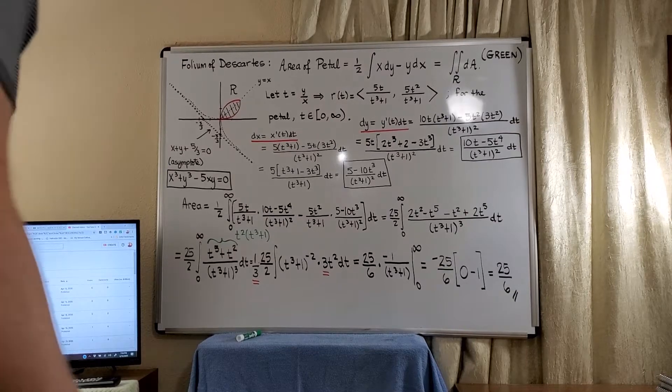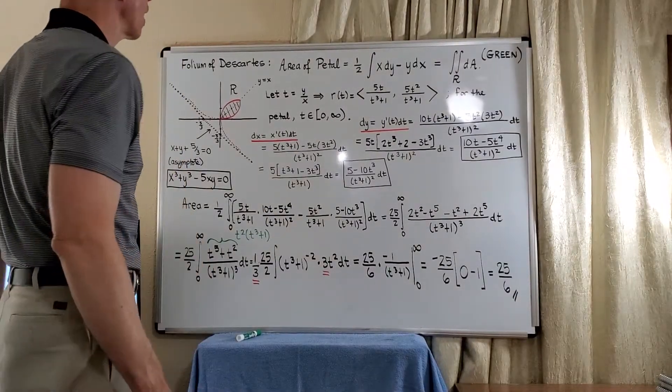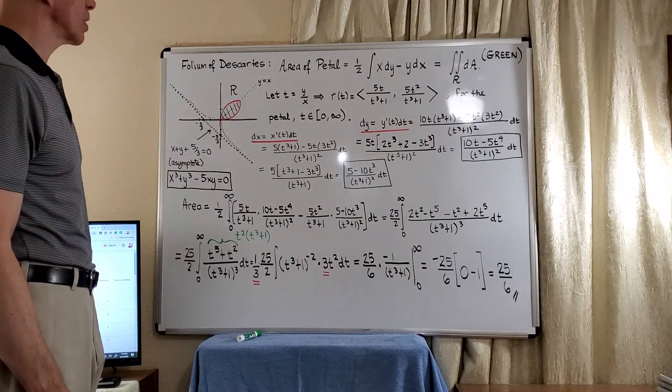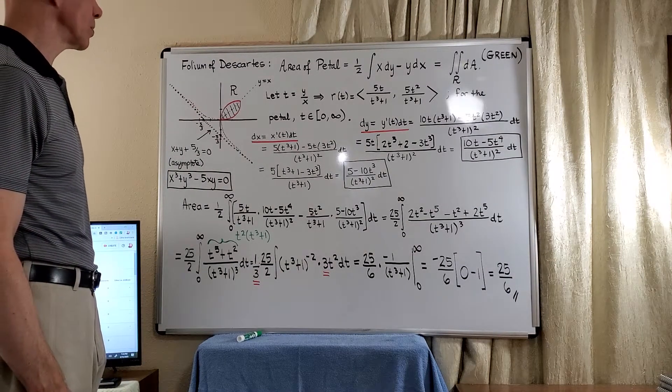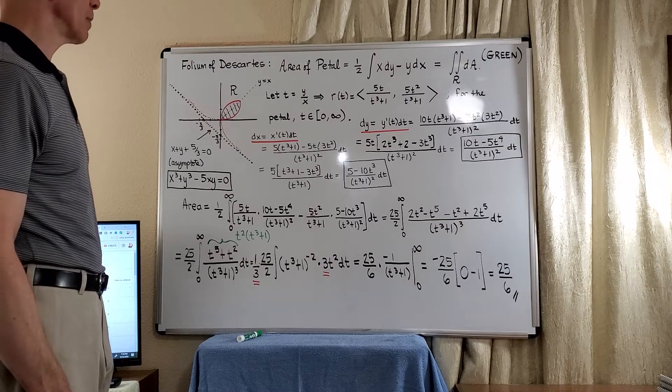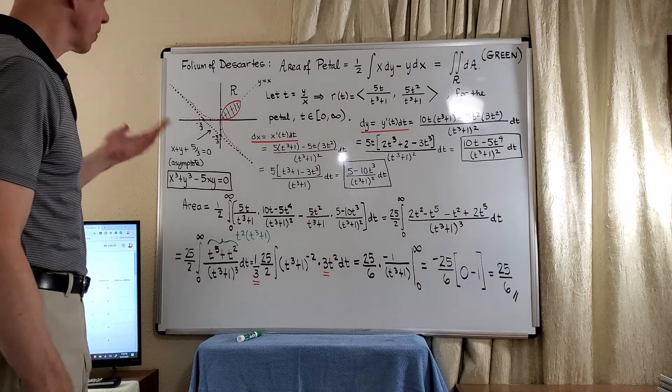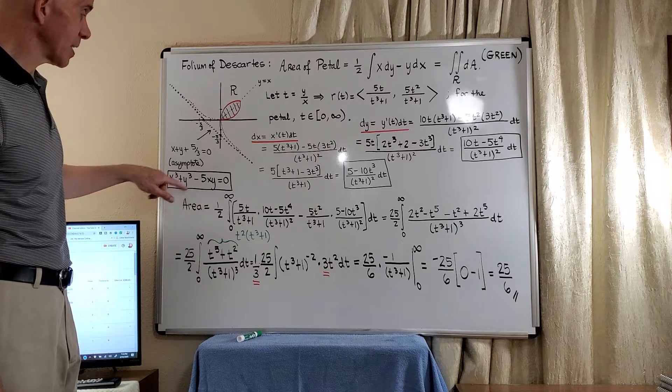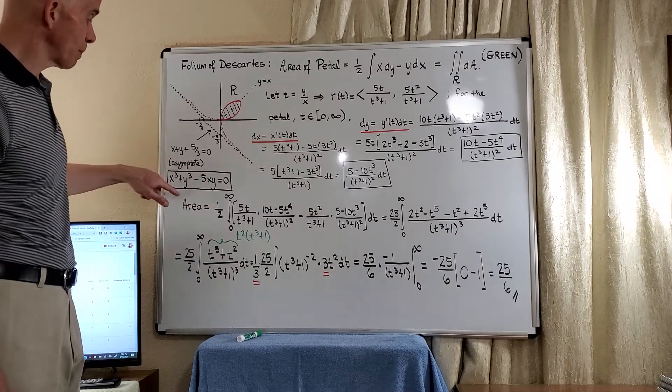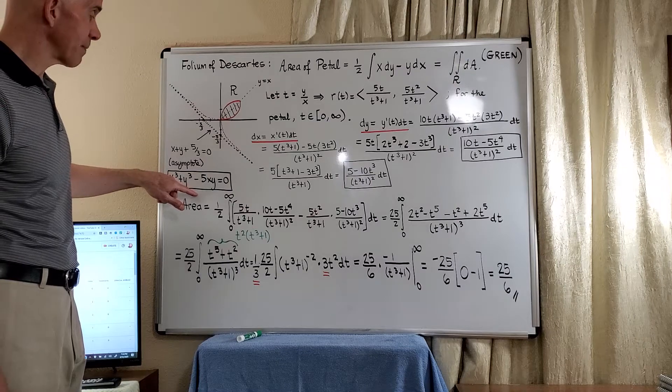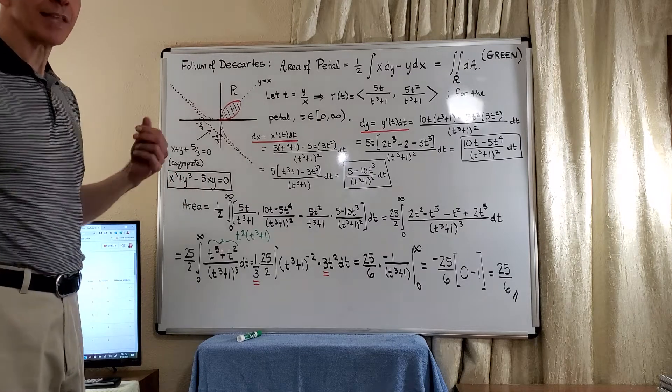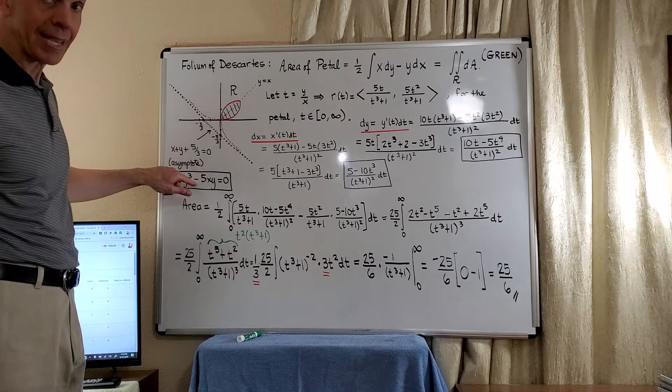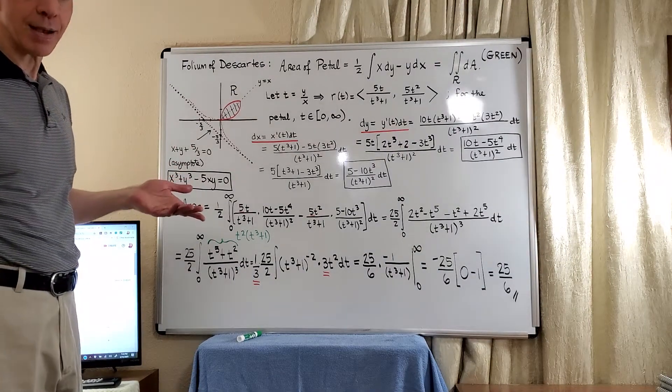Let's use Green's Theorem to compute an area. Back in Calculus 1, you study implicit differentiation, and one of the examples you normally do covers the folium of Descartes. What you normally see is a Cartesian equation like this for our problem: x cubed plus y cubed minus 5xy equals 0. The standard folium has a coefficient here of minus 3axy, where a is a constant.